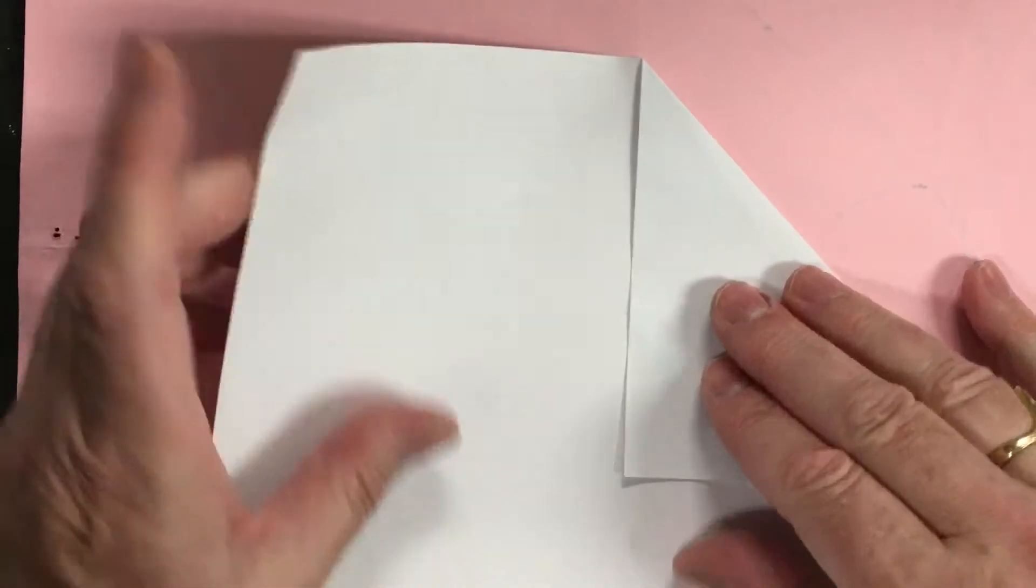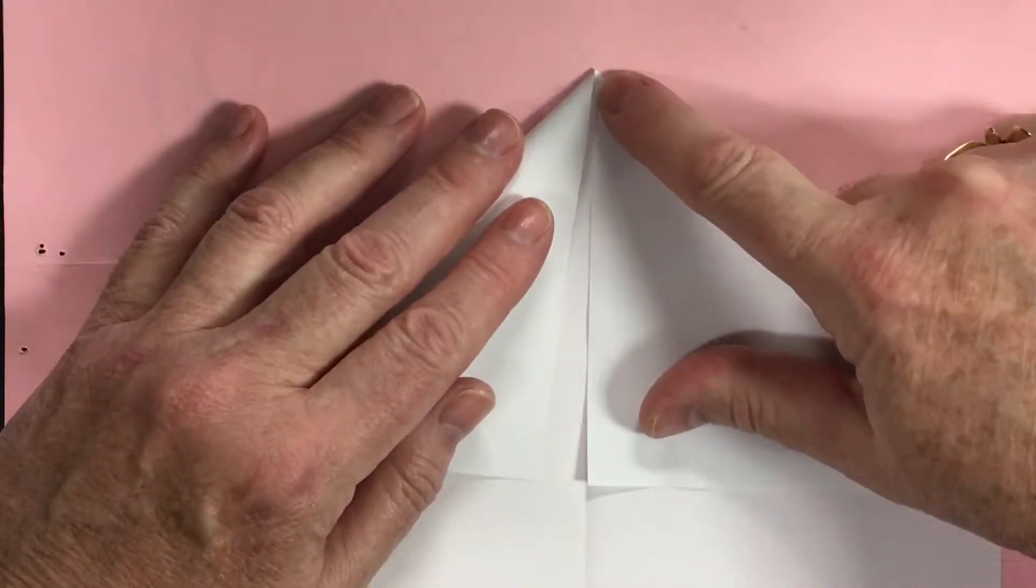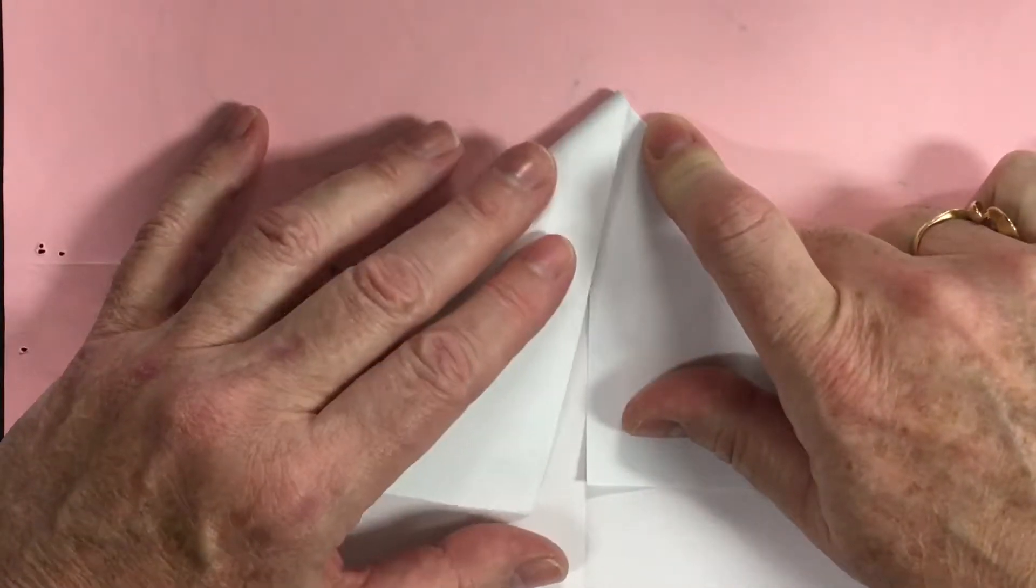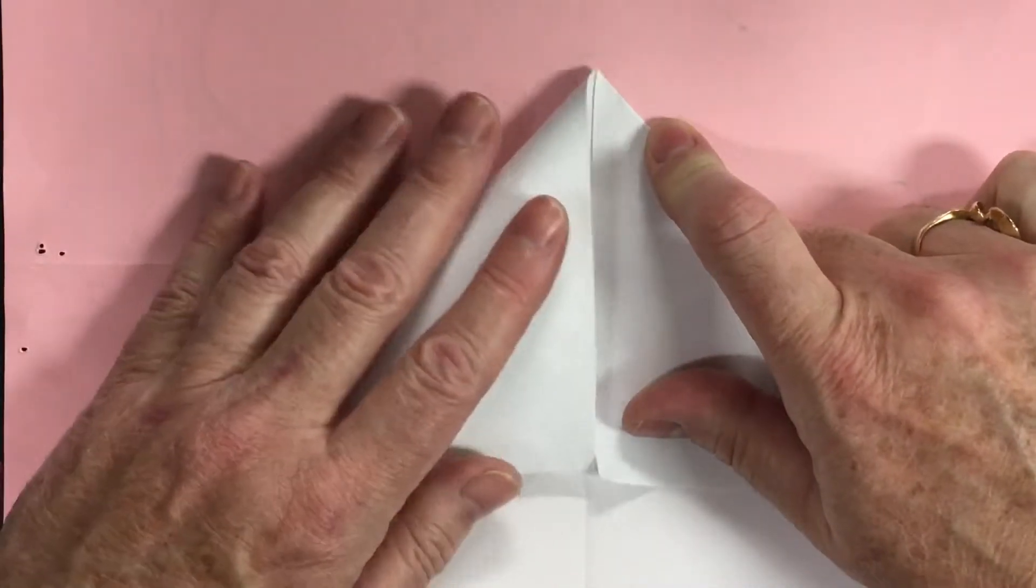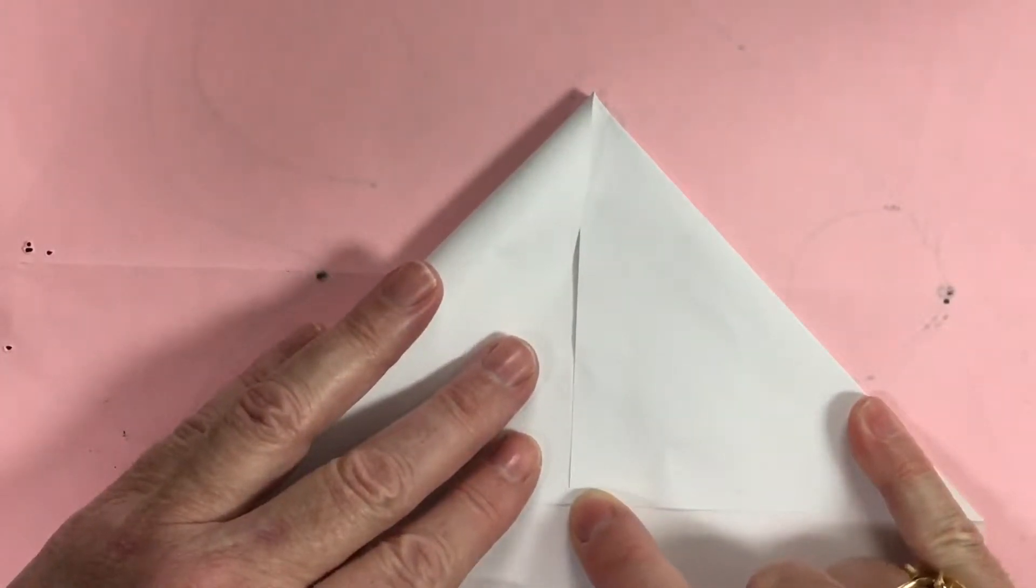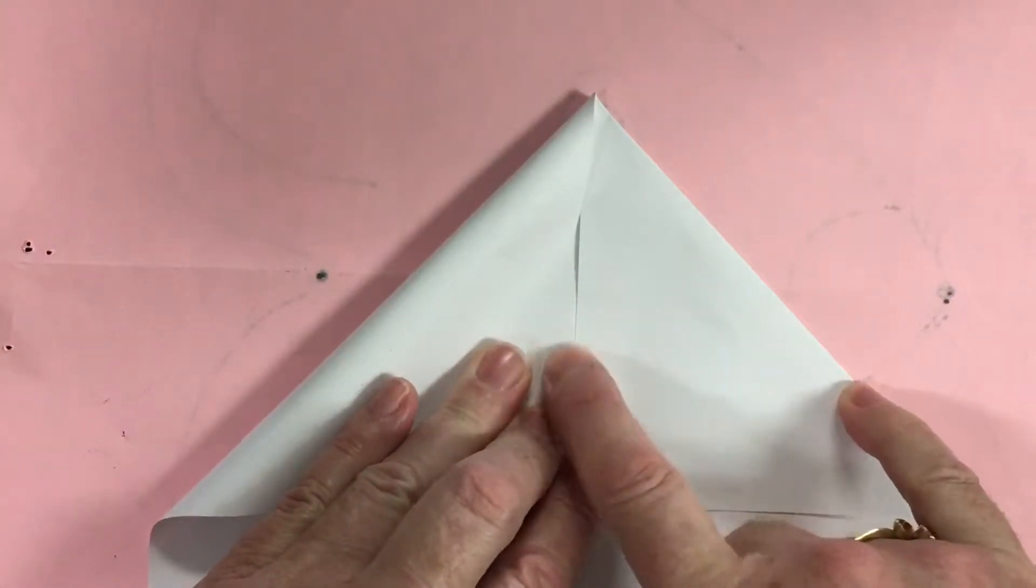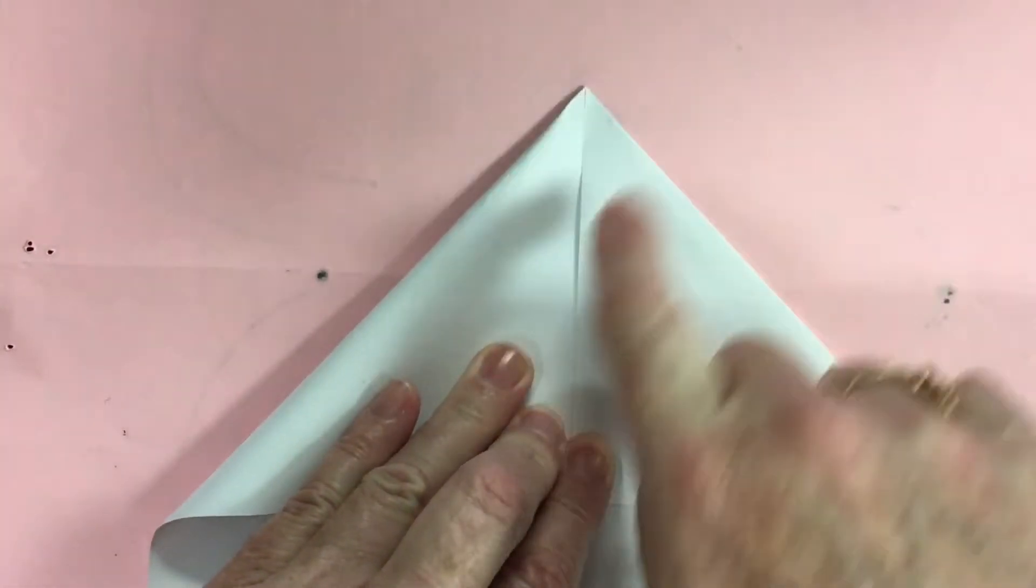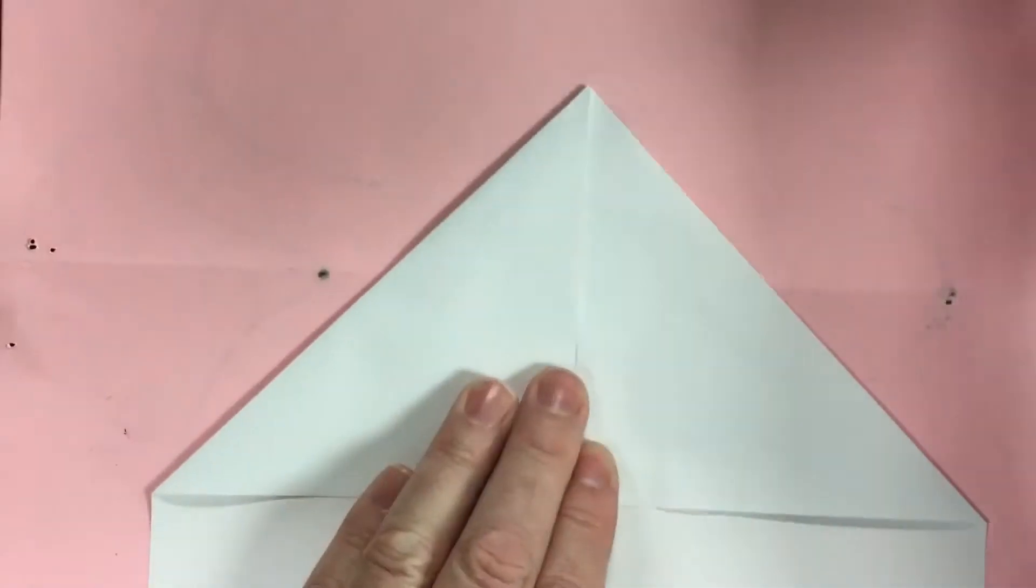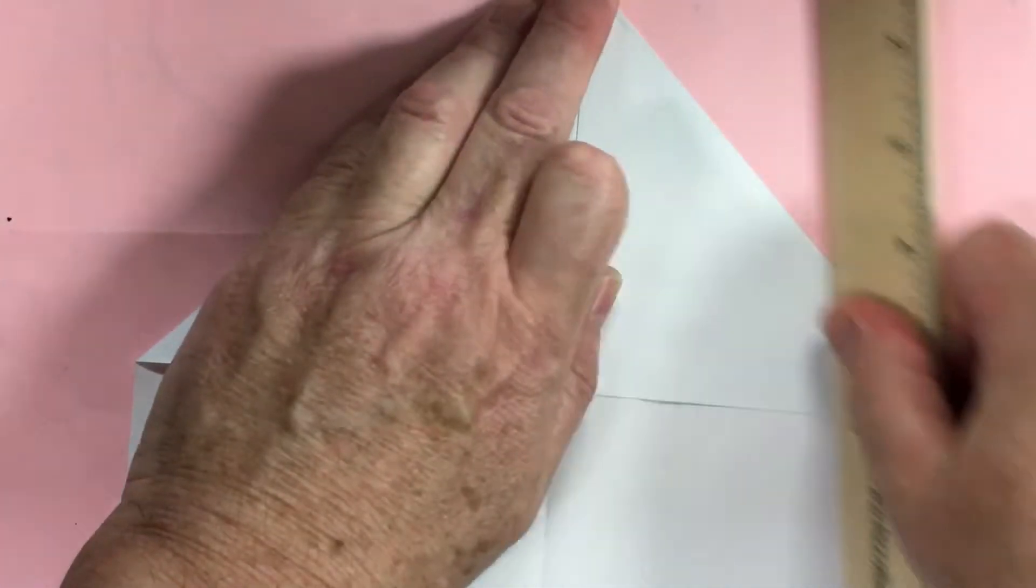Now I'm going to do the same on the other side. This is going to come exactly to this point here. I do not want to overextend, this would be overextending it. I want this to line up perfect with the bottom edge here. This is exactly touching right here. And now I'm bringing my fold and you can press down the fold so it's perfect.